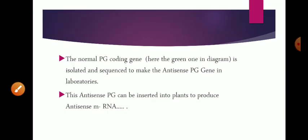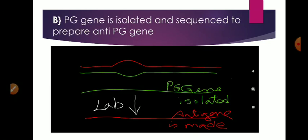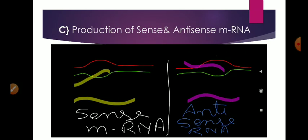Next, the normal PG coding gene is isolated and sequenced. Here, the green one is the PG gene that is responsible for polygalacturonase enzyme. This gene has been isolated and in lab they form anti-gene, antisense gene. In lab it is made so that we can make an antisense mRNA.